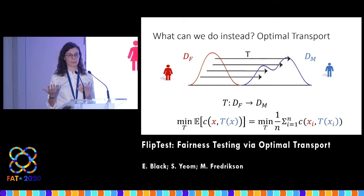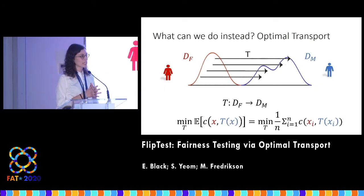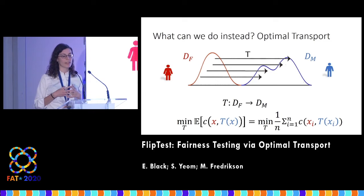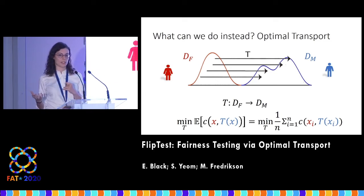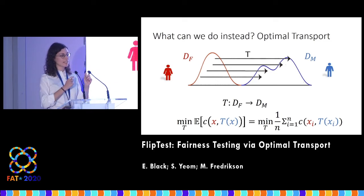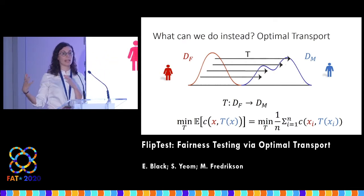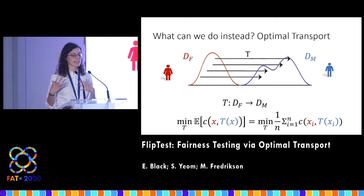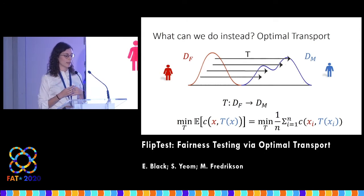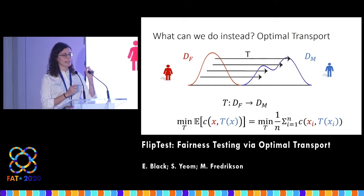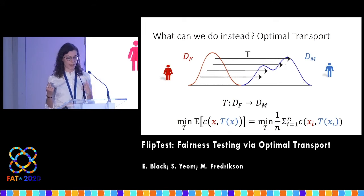So to answer these problems, what do we use in FlipTest? We use something called optimal transport. Optimal transport is a method of morphing one distribution into another distribution. It does this by taking all of the points in one distribution and moving them so that the end result is the other distribution, in a way that minimizes some cost function that you specify.